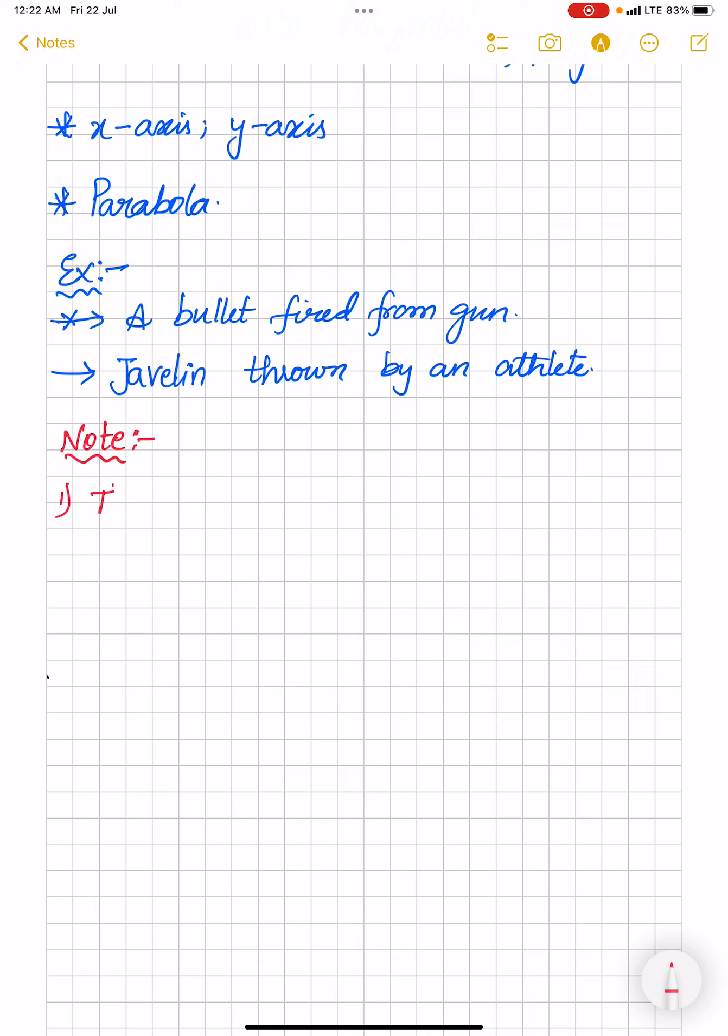The first one is the free fall acceleration g, whatever we call it as acceleration due to gravity, is constant during the motion of the projectile. And also we know that the acceleration due to gravity is produced due to the gravitational pull of earth. So therefore, the direction is always downward. It is directed always downward.